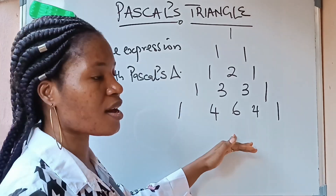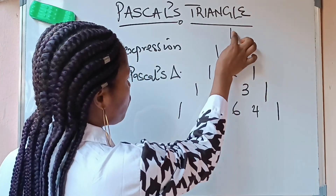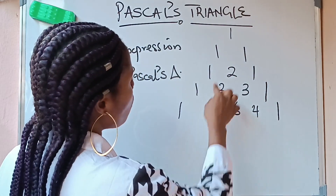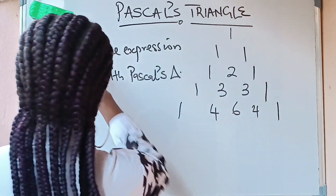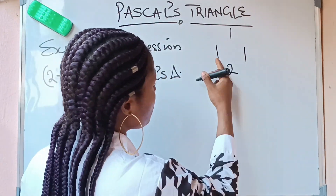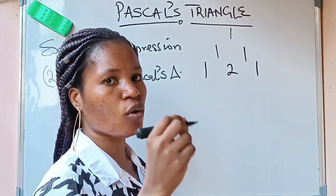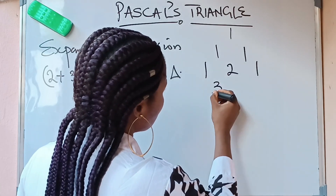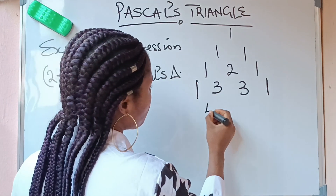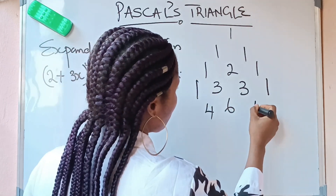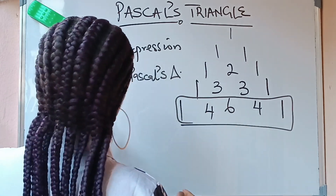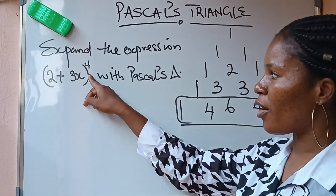In case you do not understand what I did — you write the first row as 1, second as 1, 1. Then for the third row, 1 plus 1 gives you 2; write that 2 in between the 1 and 1, then complete your row with 1 on each end. So 1 plus 2 gives you 3, 2 plus 1 gives you 3 — complete that row again. Then 1 plus 3 gives you 4, 3 plus 3 gives you 6, 3 plus 1 gives you 4. This row — the one that has 4, 6, 4 — is the row we need to use to solve this.